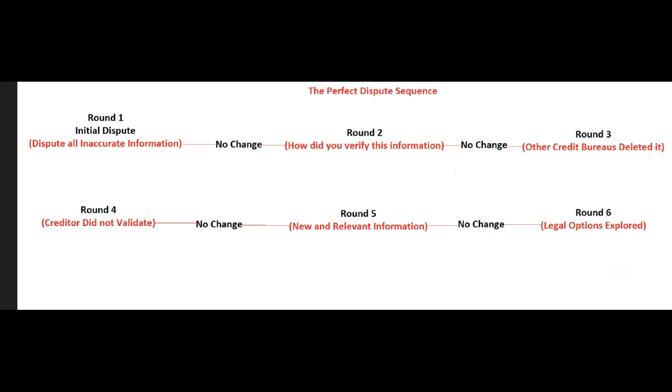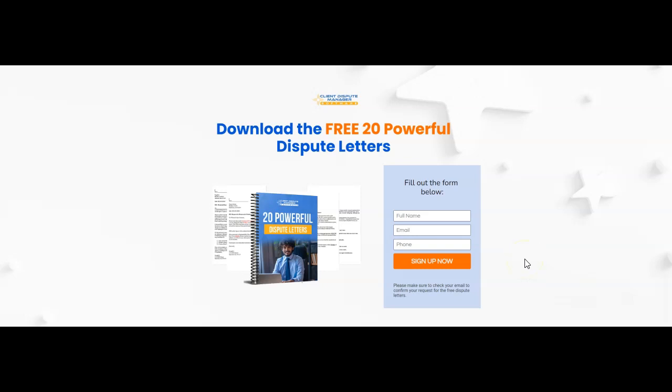This is what the perfect dispute sequence looks like: Round one — initial dispute. Round two — how did you verify this information? Round three — other credit bureaus deleted it. Round four — creditor did not validate. Round five — new and relevant information. Round six — legal options explored. It's the perfect dispute sequence. When I was running the credit repair business, I followed the same sequence over and over again. It's the perfect sequence whether you're trying to improve your own credit or running a credit restoration business to help others.